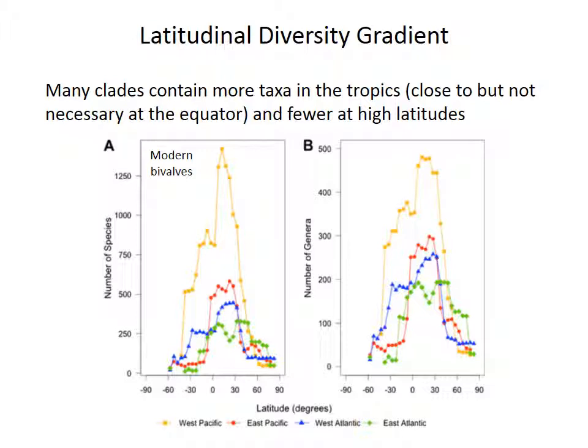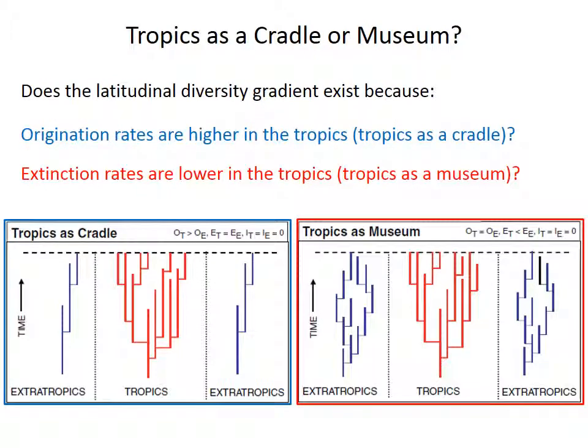So why do these latitudinal diversity gradients exist at all? Why are there more species near the equator than near the poles? The fossil record can tell us, at least for this example of marine bivalves. Two types of explanations have been proposed to account for these diversity gradients. One argues that the tropics contain more species because origination rates are higher there than outside of the tropics — that's been termed the tropics as a cradle model, because birth rates or origination rates are responsible.